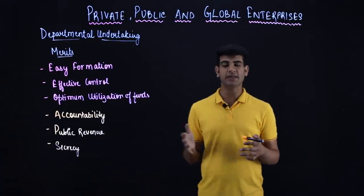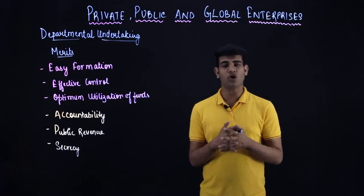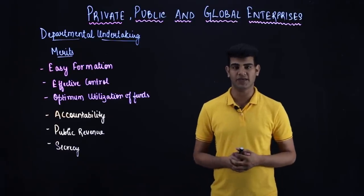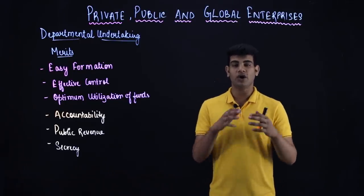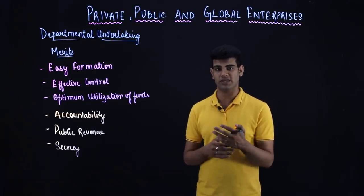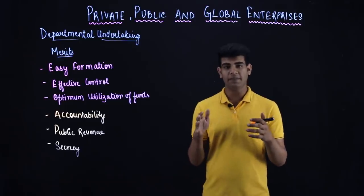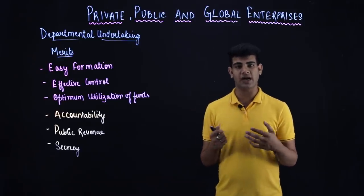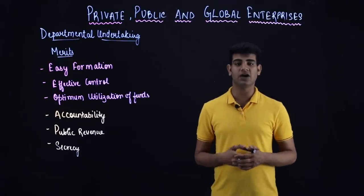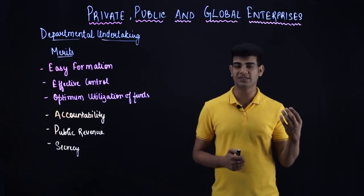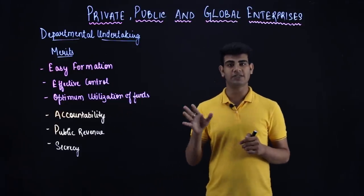Now we look at the merits of departmental undertakings. First, its formation is very easy because registering it is not compulsory. Next, effective control — the control is totally in the hands of the central or state government, making the control very effective. Next is optimum utilization of funds — because the budget comes from the central or state budget, the government clearly writes in the budget how much to spend, what to increase in expenses, and what revenue to increase.